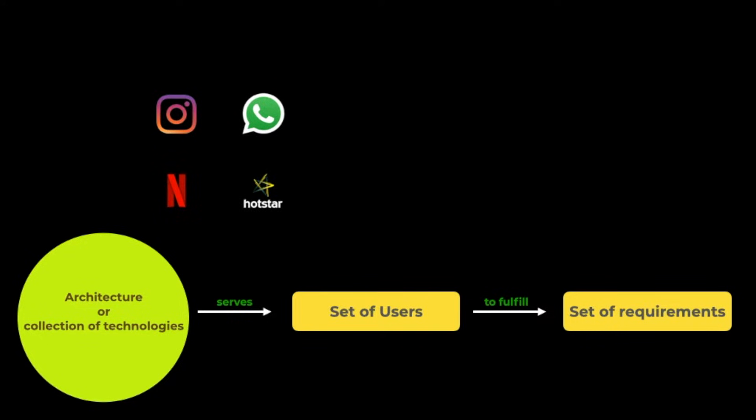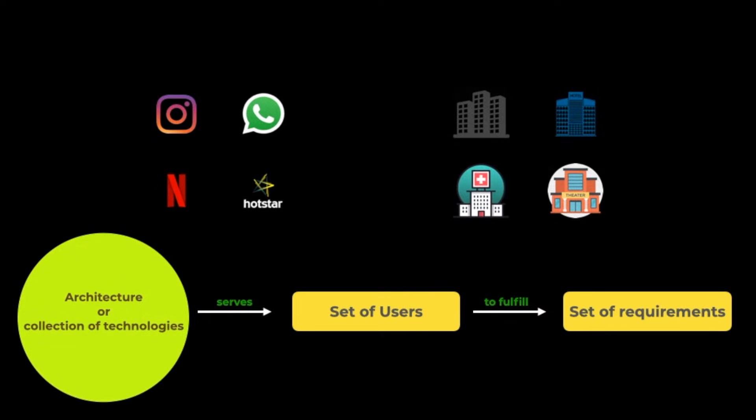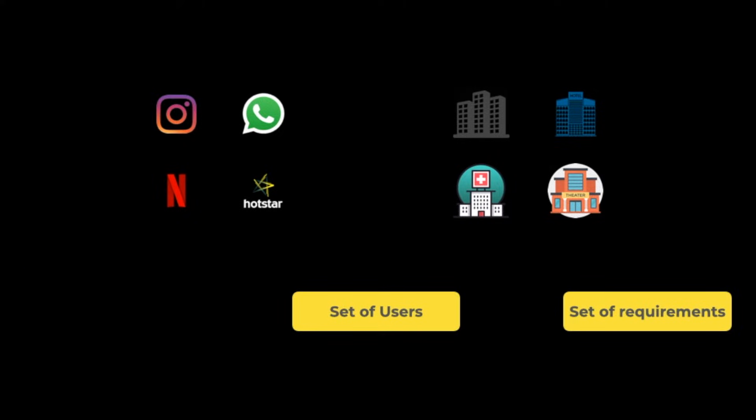In real life also, there are systems like buildings, hotels, hospitals, theaters. Those are also examples of large scale systems which serve to the needs of certain set of users with a certain set of requirements.